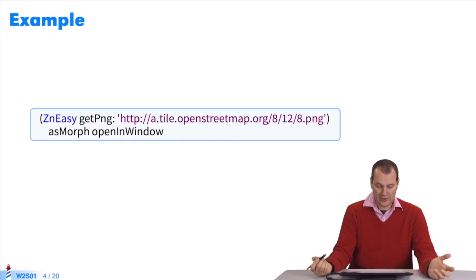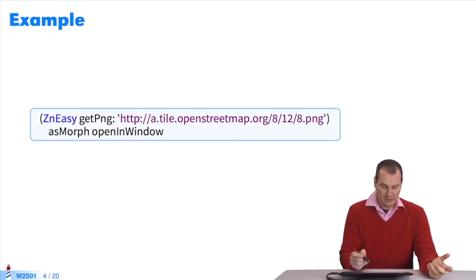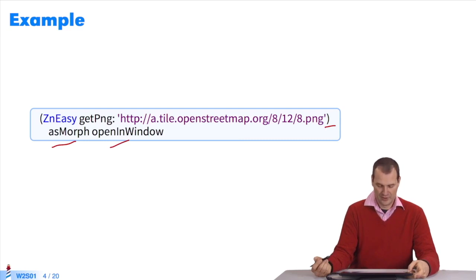For instance, let's take a tile on OpenStreetMap. I want to open it in a graphic window. This is an example of the syntax. I use parentheses because I want to get a PNG file first. I convert the PNG file into a Pharo graphic object before opening it in a window.